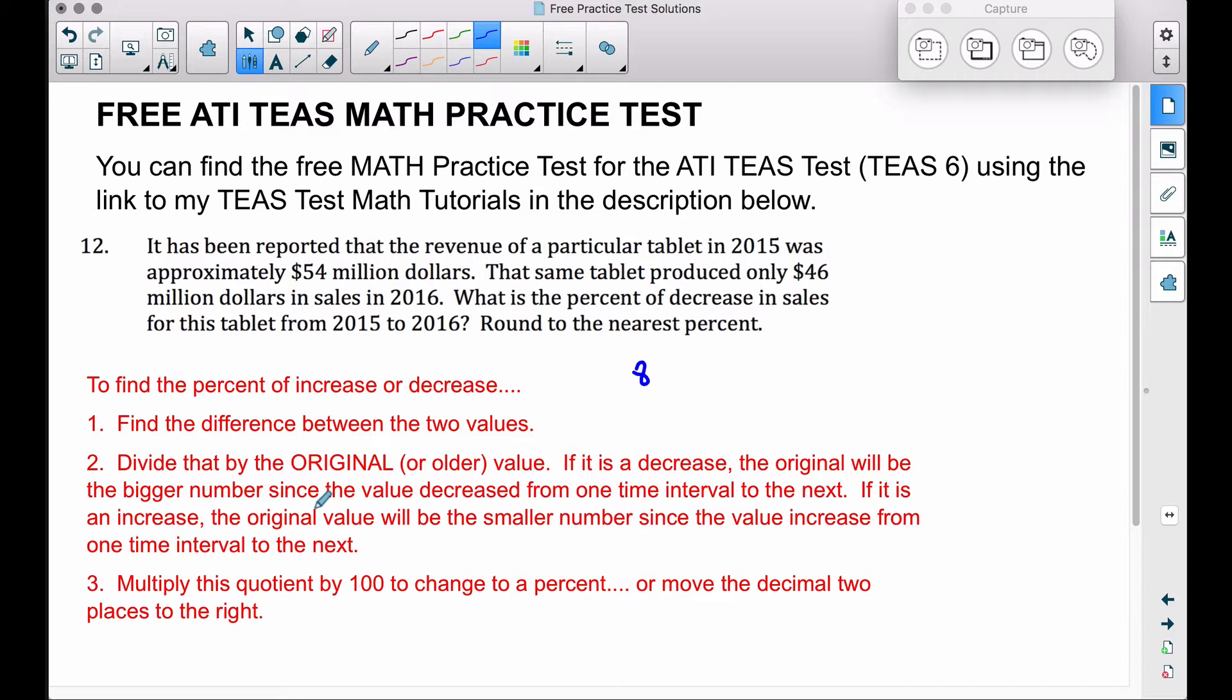This is where you have to be careful. If we have a decrease like we have in this problem, the original will be the bigger number. In 2015 it was $54 million; in 2016 it was $46 million. The older value, the original, is going to be the bigger because we had a decrease from one year to the next. So the original in this case is 54.